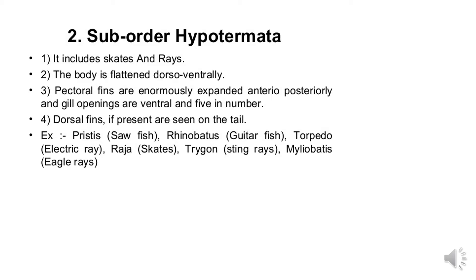Examples in Hypotremata include Pristis (sawfish), Rhinobatos (guitarfish), Torpedo (electric rays), Raja (skates), Trygon (stingrays), and Myliobatis (eagle rays).